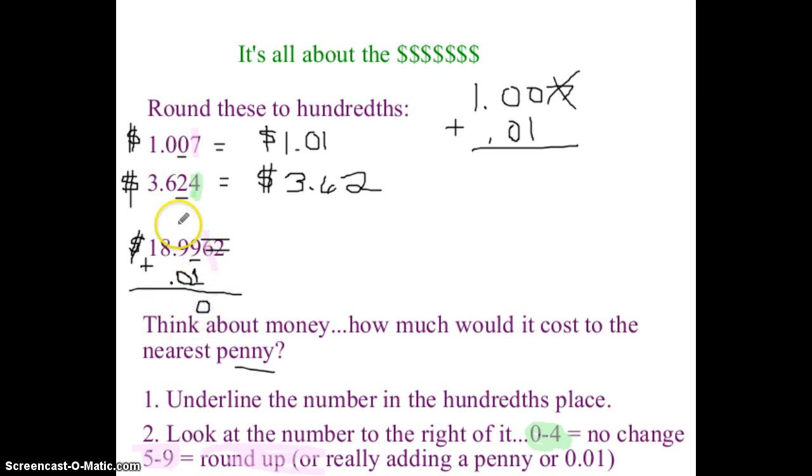Nine plus one is 10. Carry the one. One plus nine is 10. Carry the one. Eight plus one is nine. Bring down the decimal point. And then the one is $19.